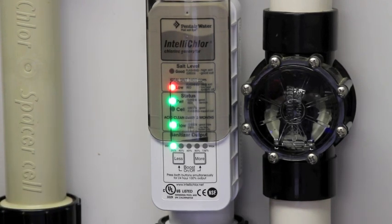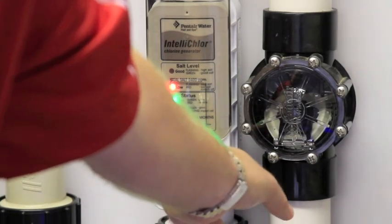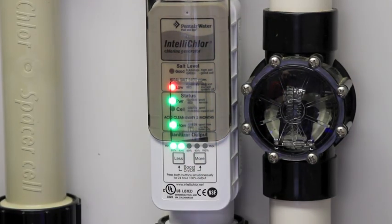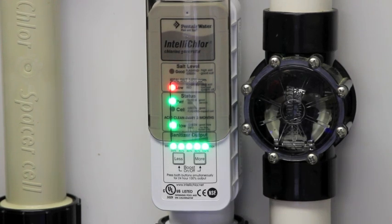And if you need to superchlorinate the pool, you simply press both buttons at the same time. And that puts the unit into a superchlorinate position for 24 running hours. After 24 hours, the unit will go back to the last preset mode.